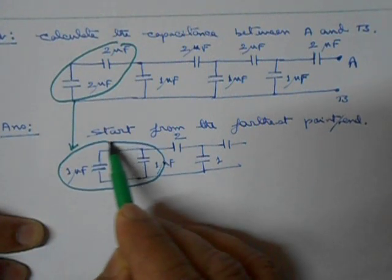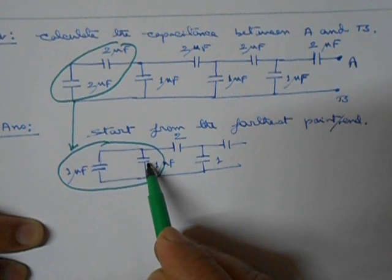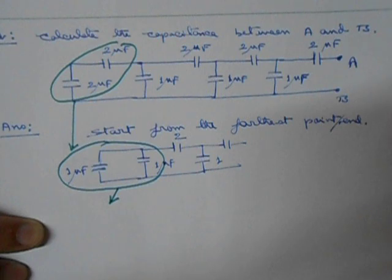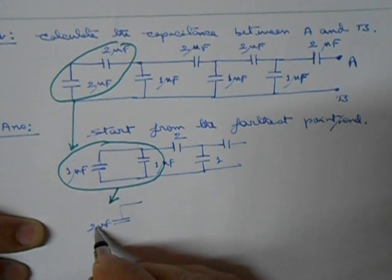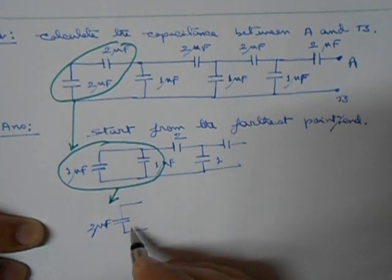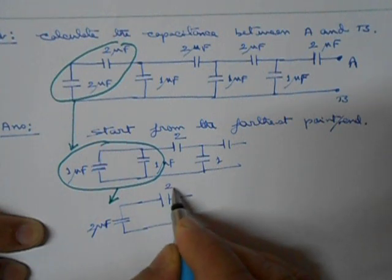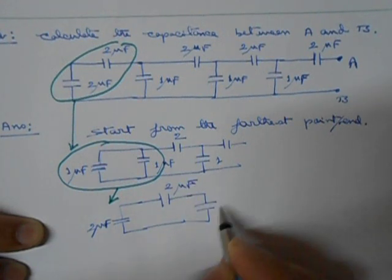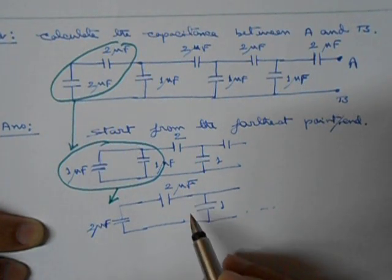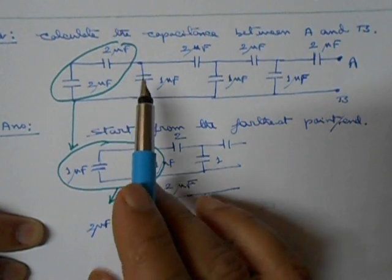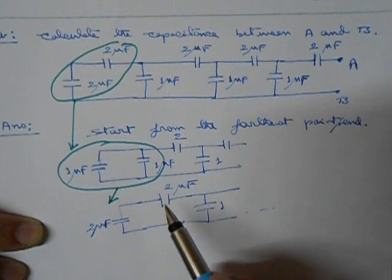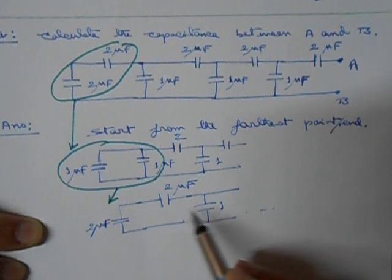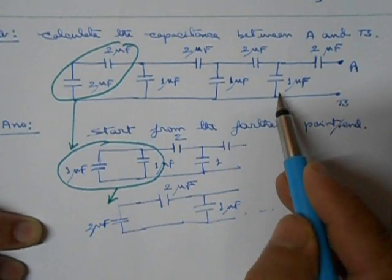Now once we reduce it, look here — this one microfarad and this one microfarad are in parallel. The equivalent of that will be one capacitor with capacitance one plus one equals two microfarad. Since they are in parallel, it reduces to two microfarad. Then we have this two microfarad in series with this two microfarad, which is again in parallel with this one microfarad. We proceed like this step by step.